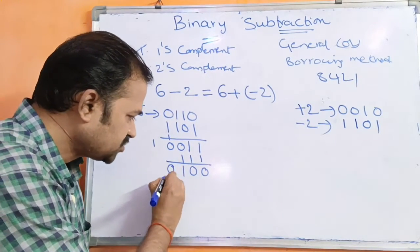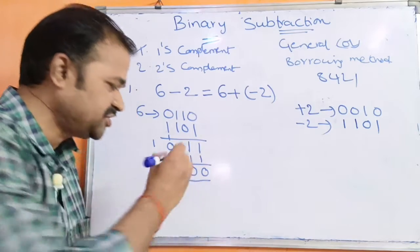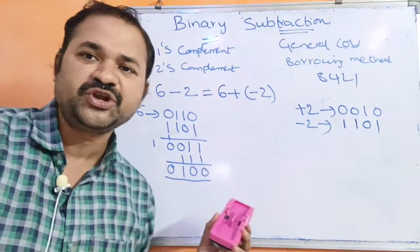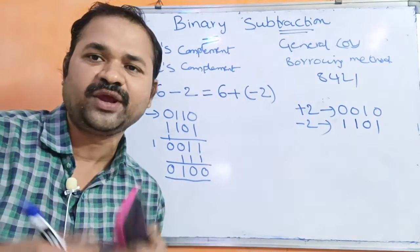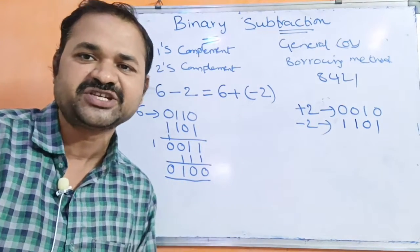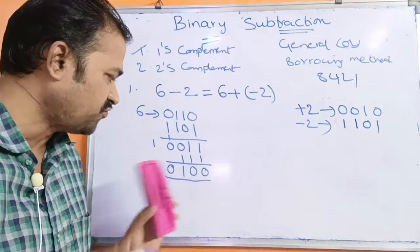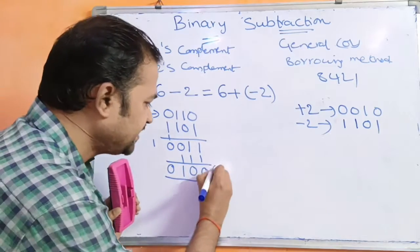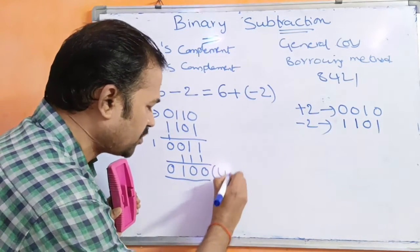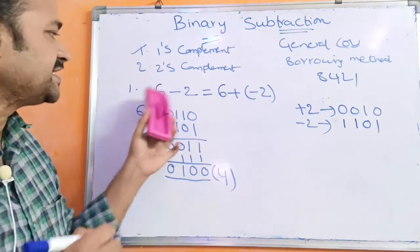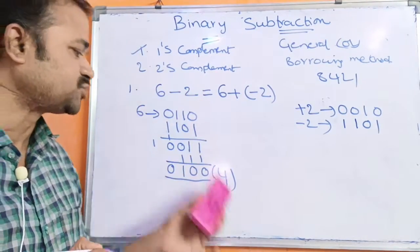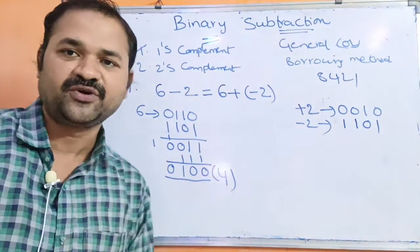So 0, 1, 0, 0 in 8, 4, 2, 1 decimal notation is 4. So the result is 4. What is the result of 6 minus 2? 4 only.